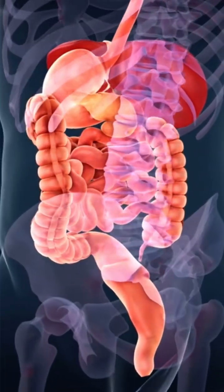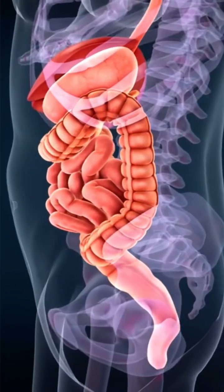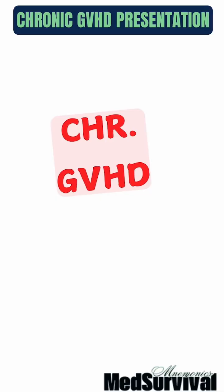To make it easier to remember, I'll share a simple mnemonic using the initial three letters of 'chronic' and 'GVHD.' Let's break it down.